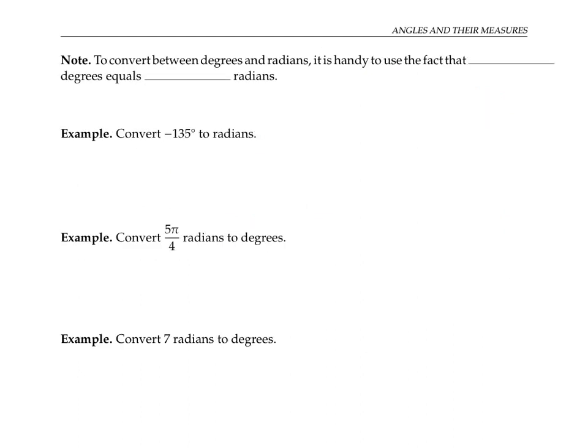To convert between degrees and radians, it's handy to use the fact that 180 degrees corresponds to pi radians. Both of these represent half of a circle.